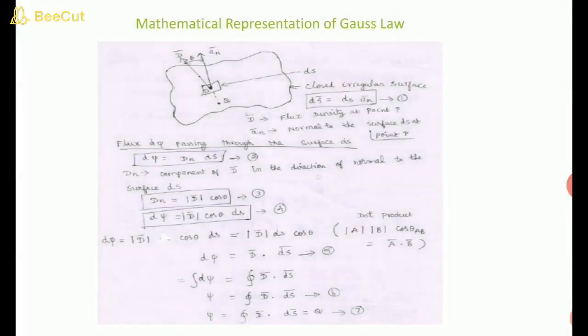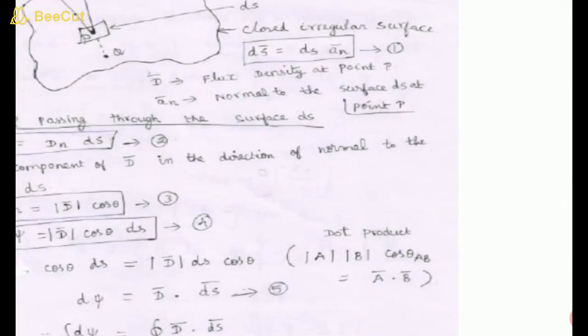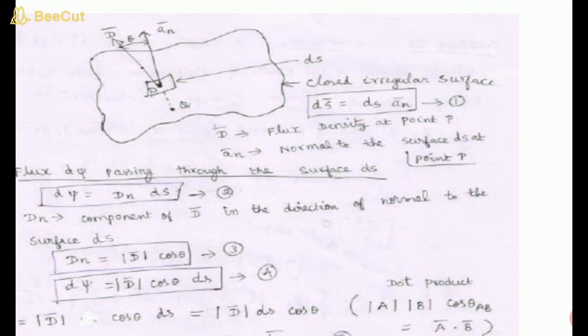Now for the mathematical representation of Gauss law — as you can see, D and the area vector form an angle theta between them (normal direction). The charge q on the surface defines it. For a closed irregular surface, DS vector is equal to DS into the unit normal vector. D vector is the flux density at point P, and a_n is the normal to the surface.